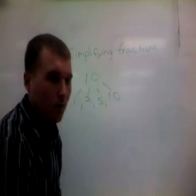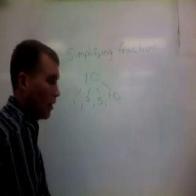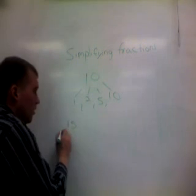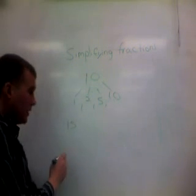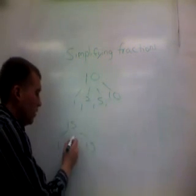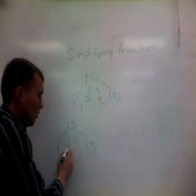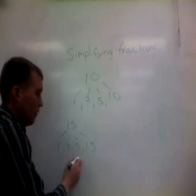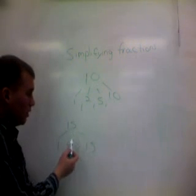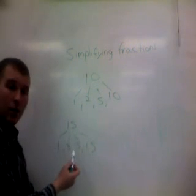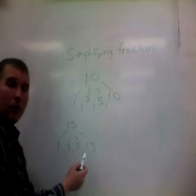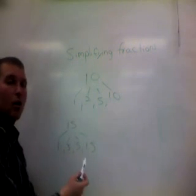So these are all my factors of 10. If I think of the number 15, my factors of 15 are 1, 15, 3, and 5. 1 times 15 is 15, and 3 times 5 is 15. So 1, 3, 5, and 15 are all factors of 15.